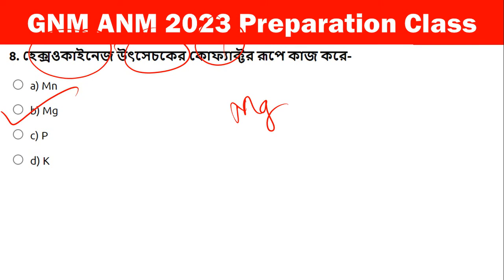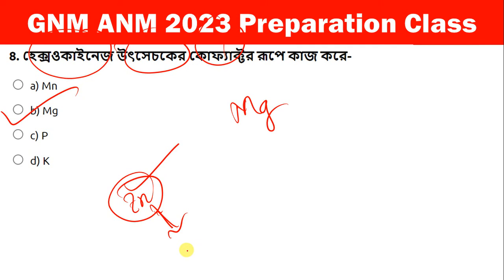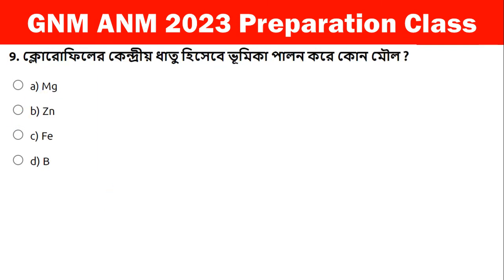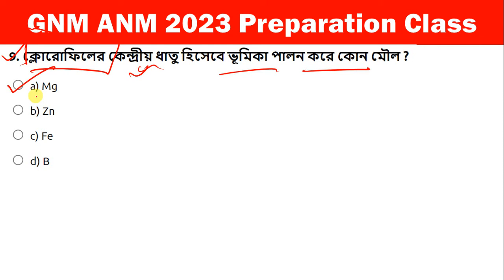Ready to check — cofactor. Carbonic anhydrase — that's the answer. Cofactor for alcohol dehydrogenase — zinc. Cofactor for hexokinase — magnesium. Next.